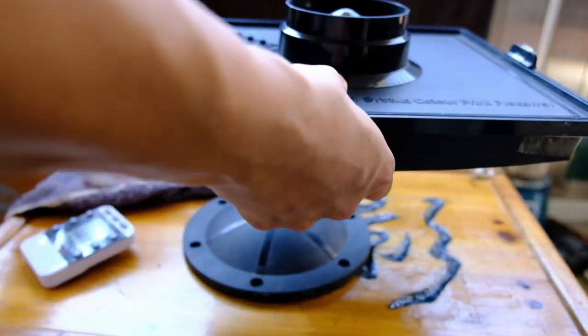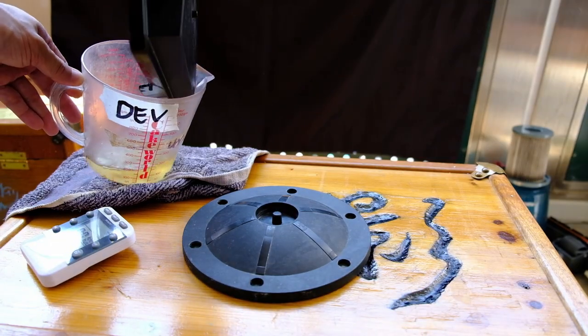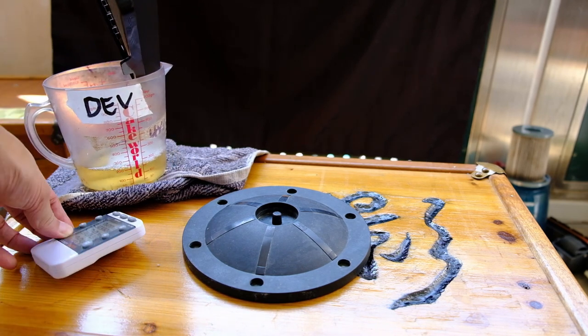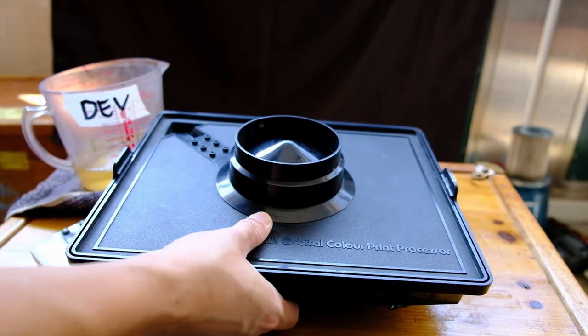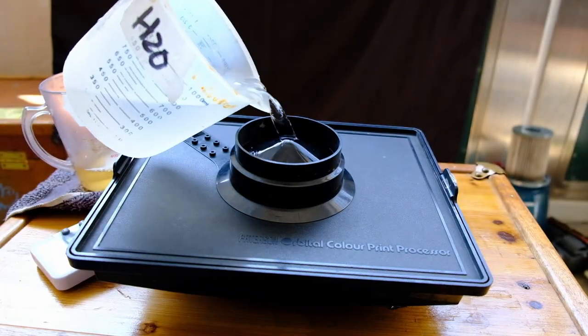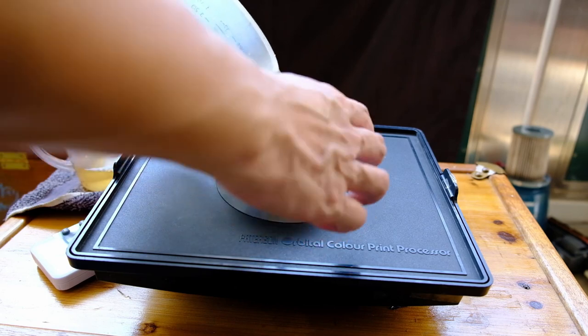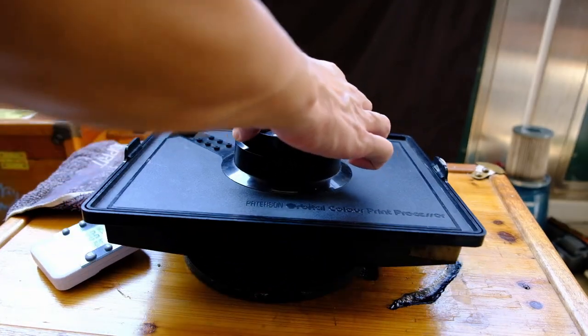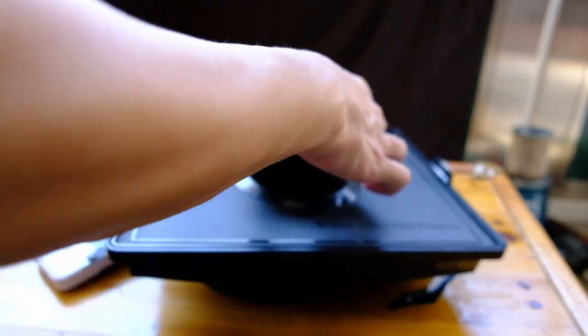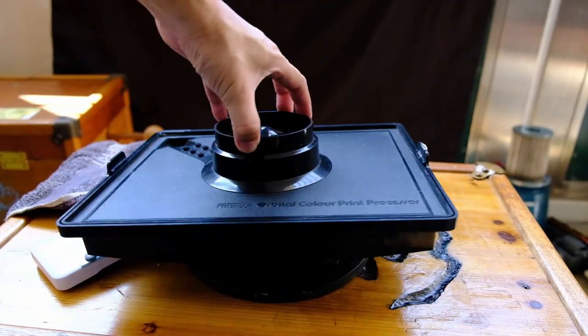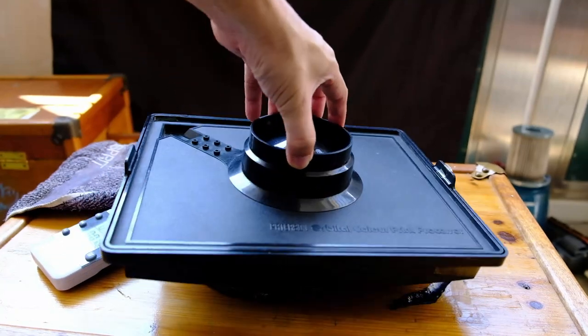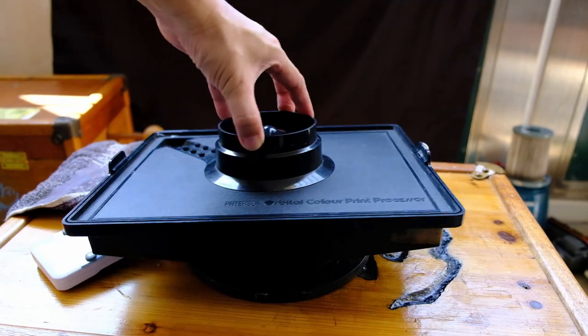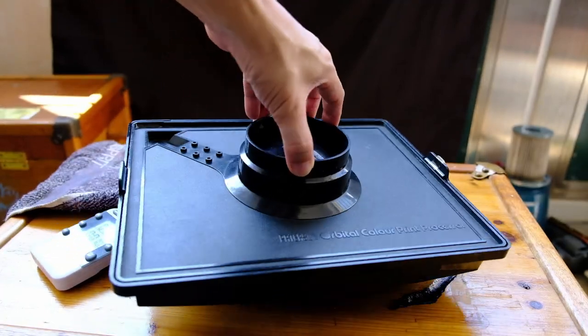So the time for the developing is up, so let's pour it back into the container. And pour in some water. This will stop the developing action and at the same time also remove the developer from the film area so that our fixer will last longer as it will not be mixed with any leftover developer.